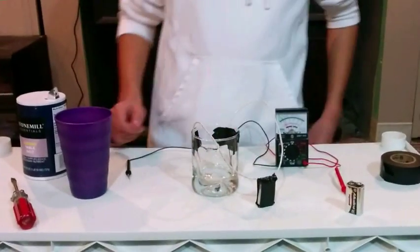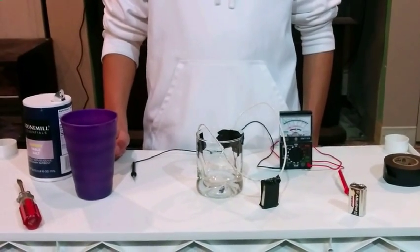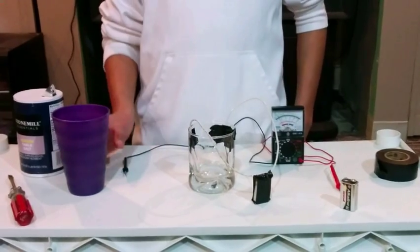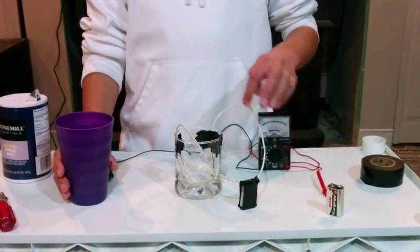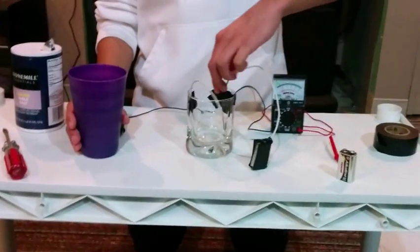To test Svante Arrhenius's work on electrolytes dissolving in water and then becoming conductive, we have tap water here, a 9-volt battery connected to two copper wires that are threaded at the end, and these copper wires lead into a glass. The electrolyte we're going to be using is salt.